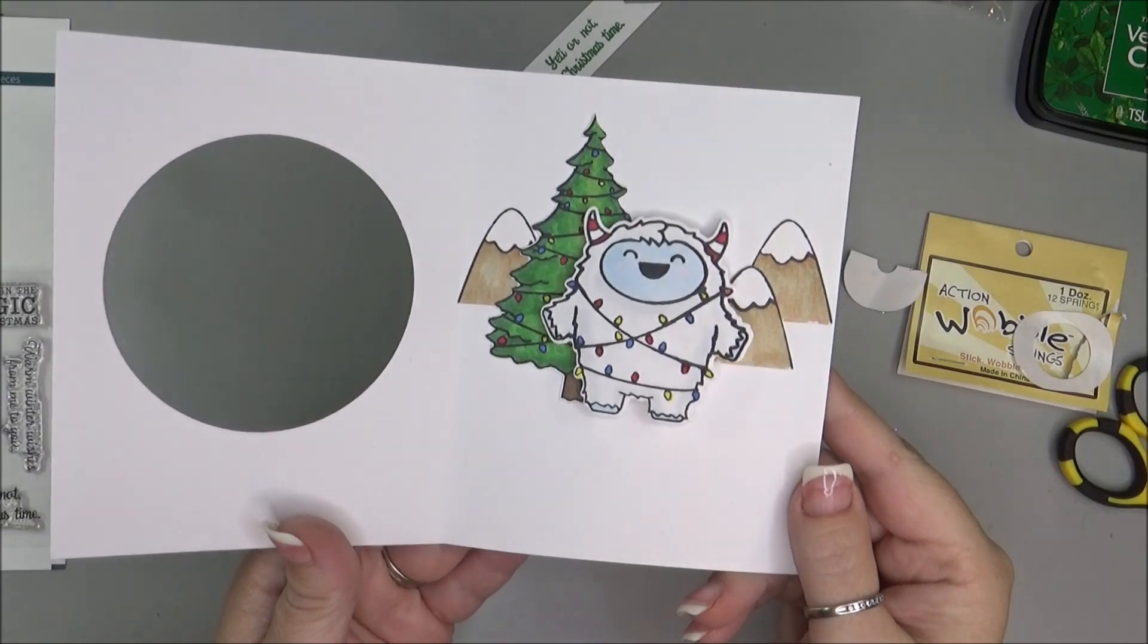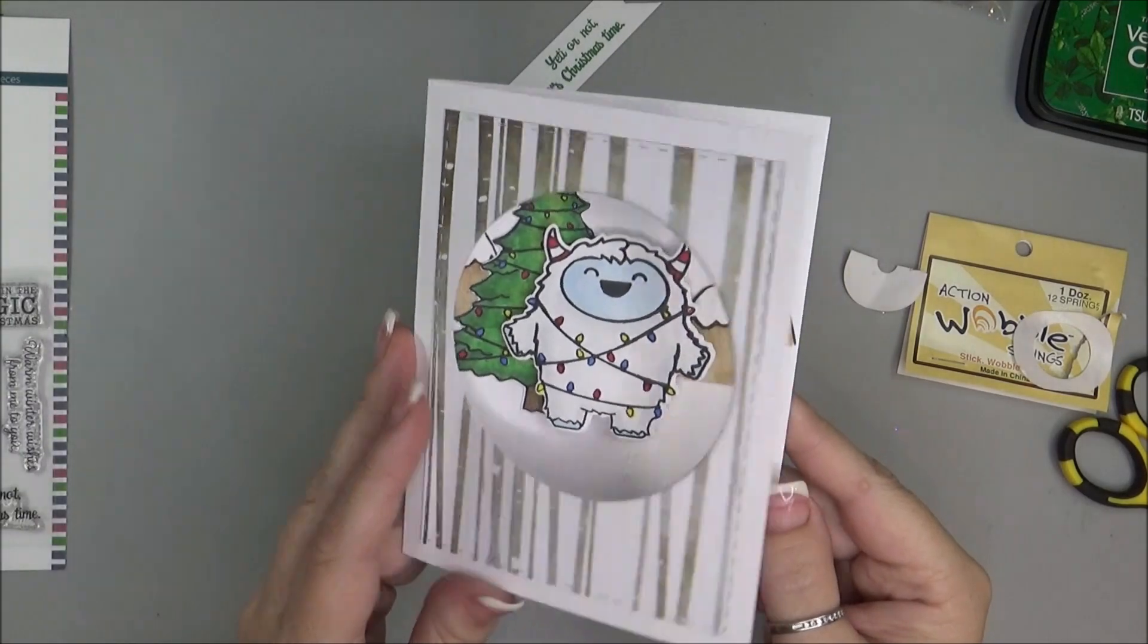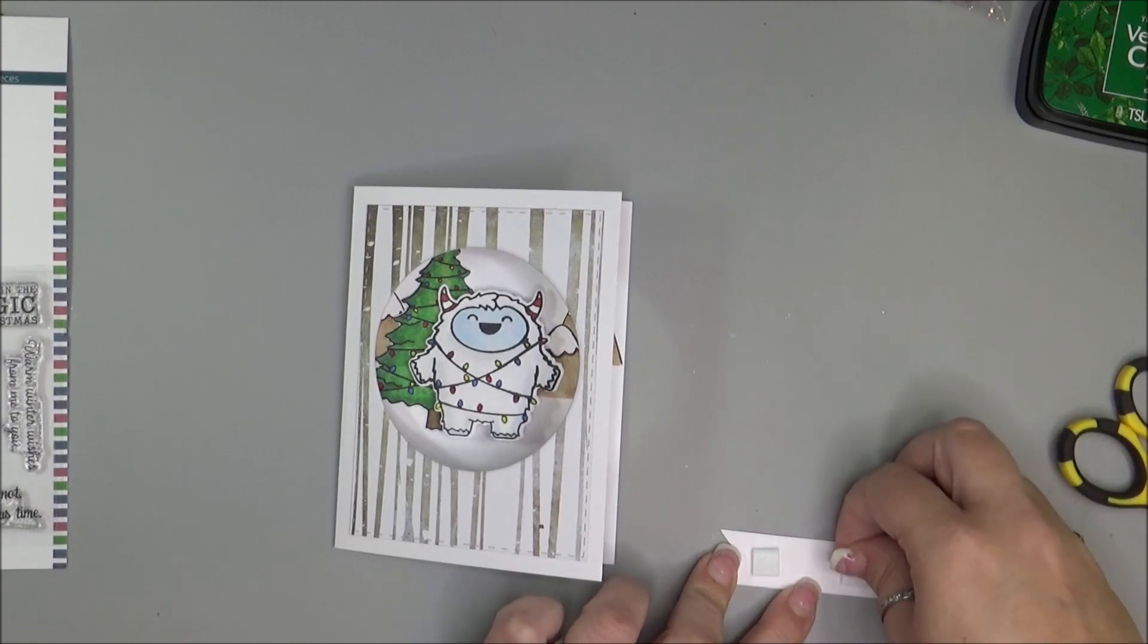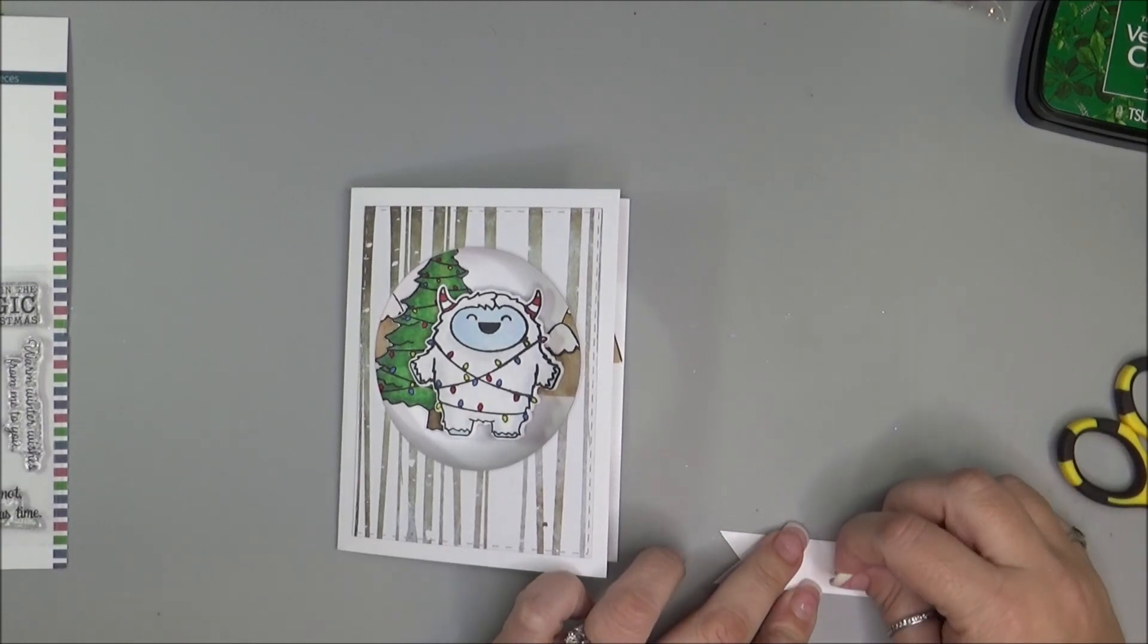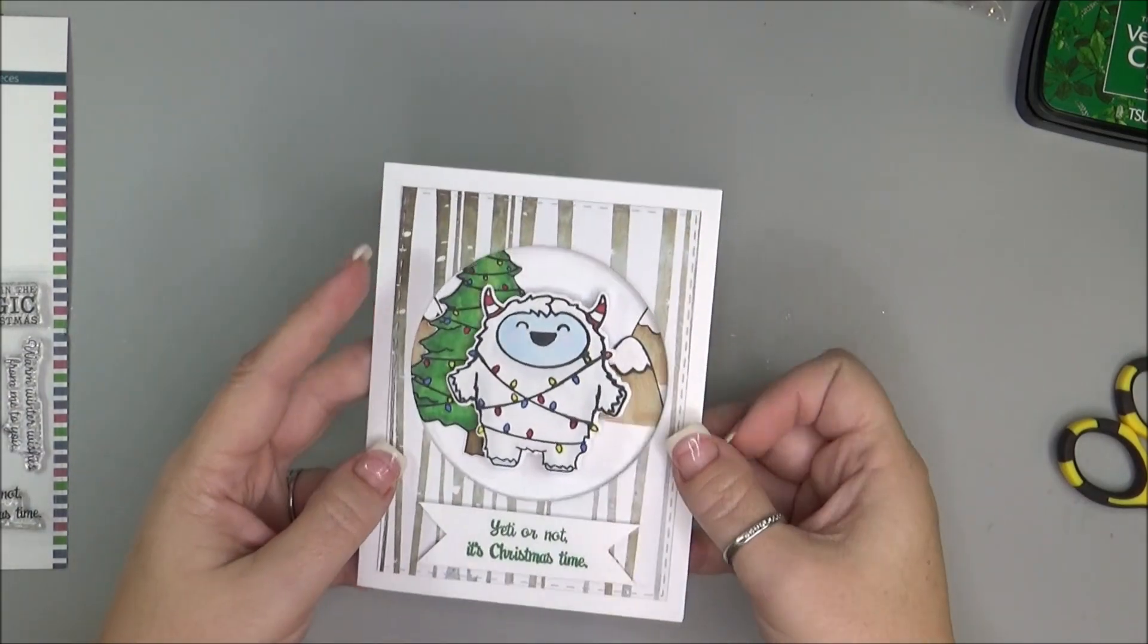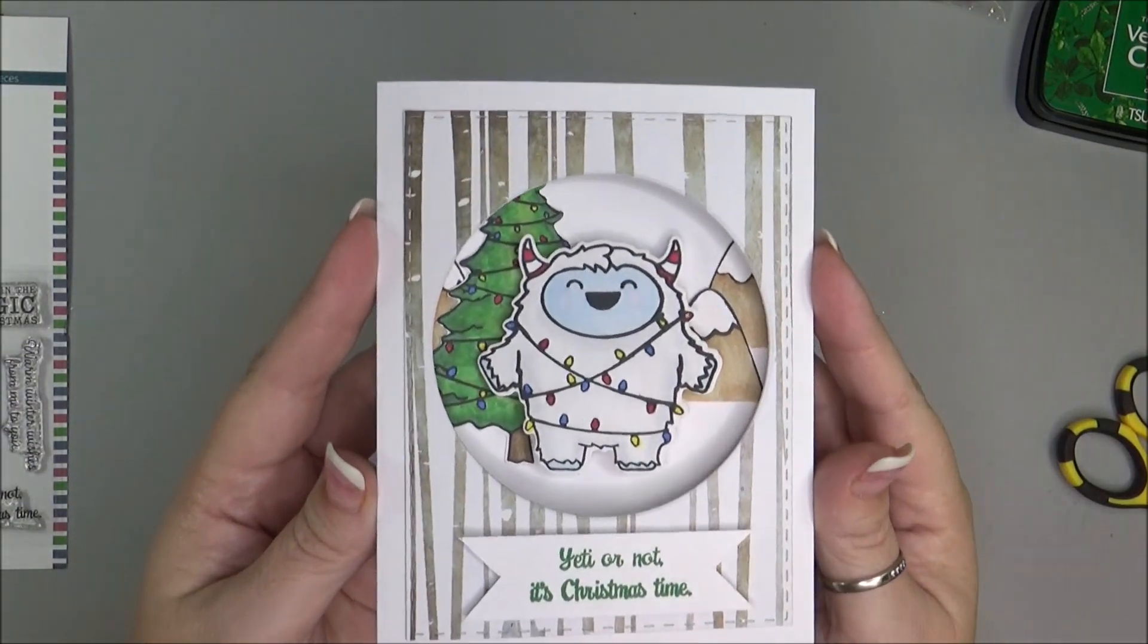And then when you open up the card, you have a scene on the inside. And then on the banner, I'm just going to add some foam squares. And add that right there to the front. And then my card is completed.